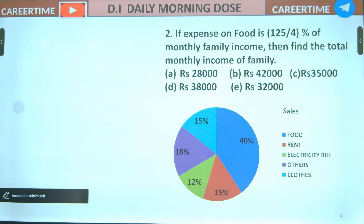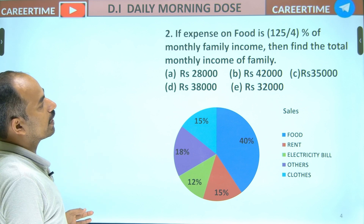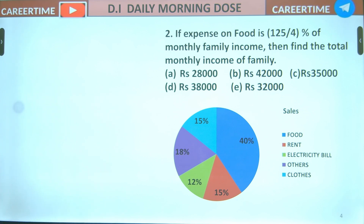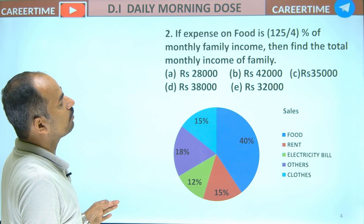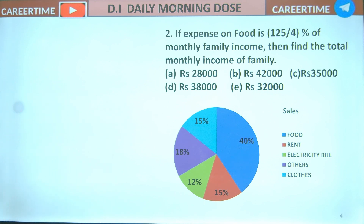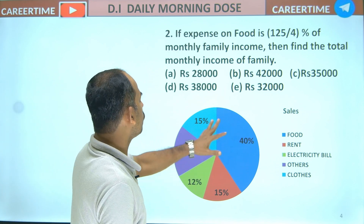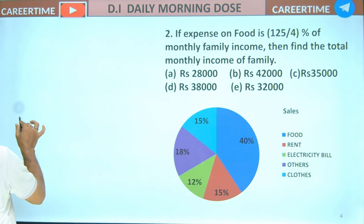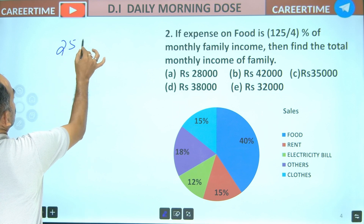If the expense on the food is 125% by 4% of the monthly family income, then find the total monthly income of the family. Find the total — $25,000.